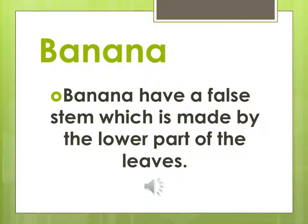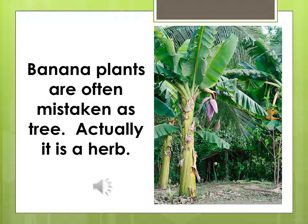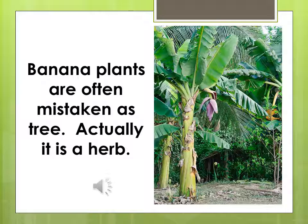Coming to the banana plant — banana has a false stem called a pseudo stem, which is made by the lower part of the leaves. It does not have a woody stem. Banana plants are often mistaken as trees; actually they are herbs. We call them herbs because they do not have a woody trunk. Instead, their stem is made up of leaves — the lower leaves modify themselves in the form of a stem. So the banana plant is not a tree; it is a herb.